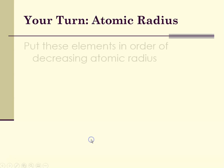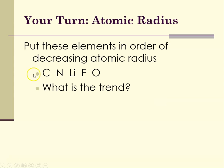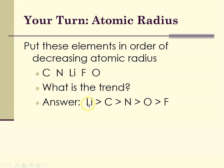So atomic radius — put these elements in order of decreasing atomic radius. Carbon, nitrogen, lithium, fluorine, and oxygen are all in the same period of the periodic table. The trend is that radius decreases from left to right across a period. So lithium, which is the farthest to the left, would be the largest, and then we'll move along to fluorine, which is the most to the right, and that would be the smallest. So left end of the periodic table is largest, right end of a row is smallest.